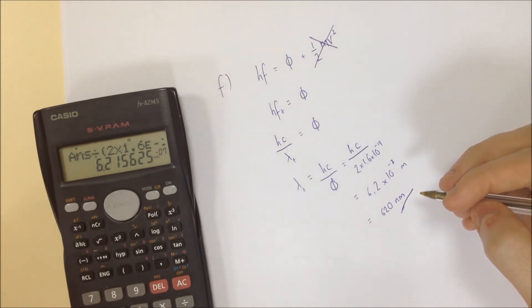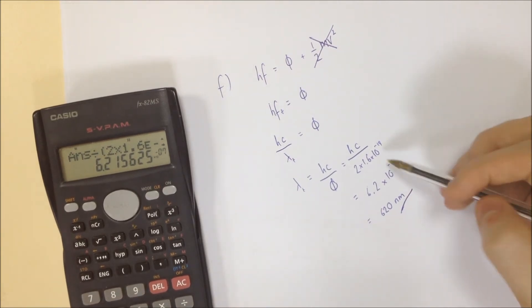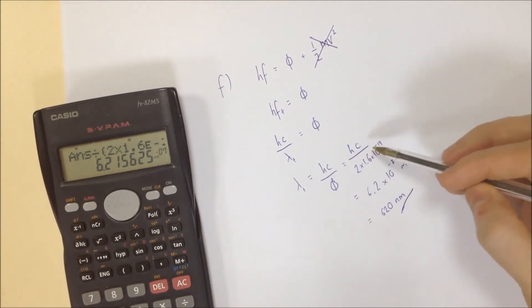Now, I am just looking across at the mark scheme, which has that as 155 nanometers, despite the fact they've put in the same numbers as me here. And so this is clearly a mistake in the mark scheme. So if you are looking at the mark scheme, be aware of that.